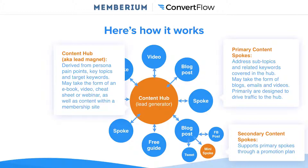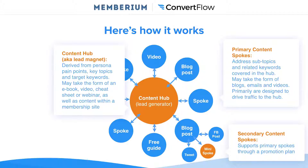Then you have what are called primary content spokes. These content spokes are primarily designed to drive traffic to the hub and promote your lead magnet, membership site, or any gated content that you have. Each content spoke should address subtopics and related keywords covered in the hub. This may take the form of blog posts, emails, and videos. You create all these sub content pieces that then promote your lead magnet or the premium content in your membership site. Overall, this helps you generate more leads, keep visitors from dropping off after reading one blog post, and helps you build a better brand, educate your visitors, and develop a better relationship with them.